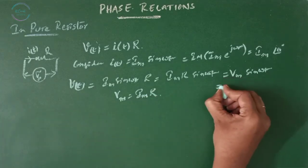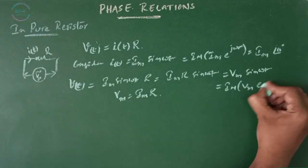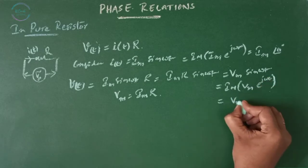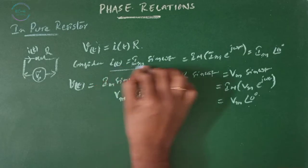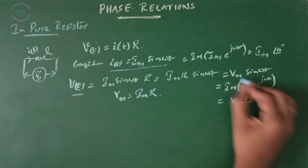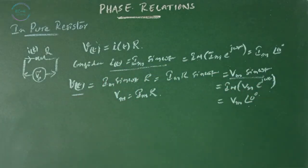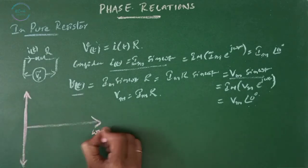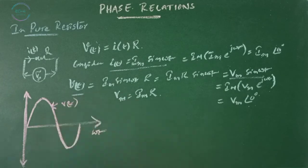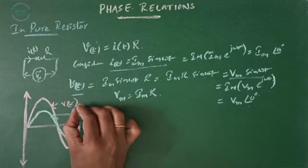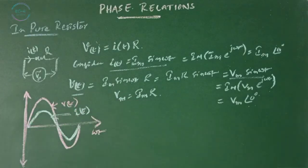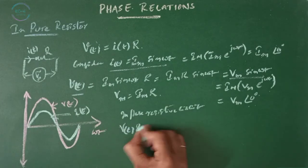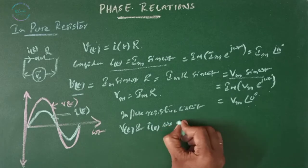In imaginary terms we can write Im{Vm·e^(jωt)} = Vm∠0. This is our current equation and this is our voltage equation. If we draw that, we can say that in a pure resistive circuit both voltage V(t) and current I(t) are in phase.